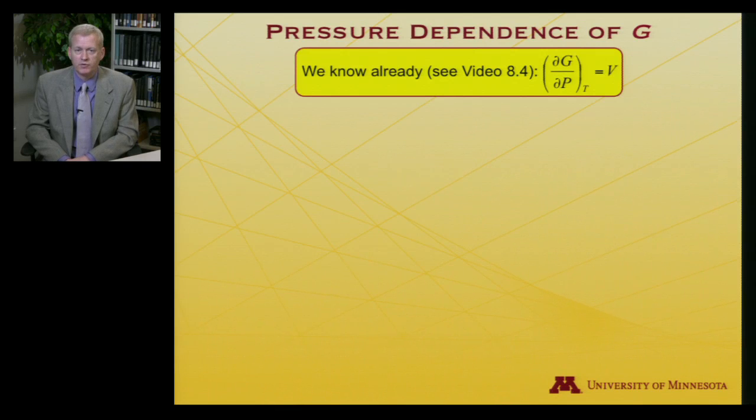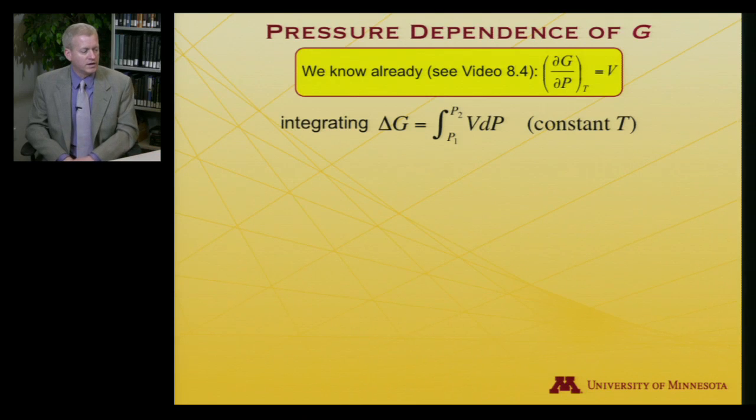So I'll remind you, and you can go look back at video 8.4 if you want to see the derivation, that the partial derivative of the Gibbs free energy with respect to pressure at constant temperature is the volume. And so if I integrate ΔG over a pressure change, I'll get the integral from P₁ to P₂ of the volume dP.